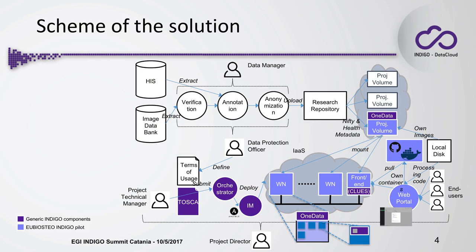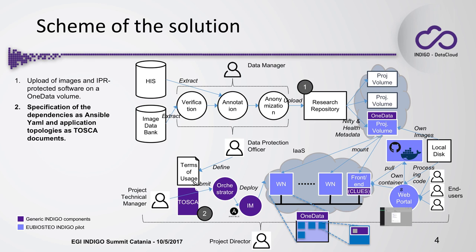Our solution proceeds through several stages. The first stage is to produce the data needed for the project — from hospital information, we go through verification, annotation, and anonymization to create a resource repository available across different project volumes using OneData. Once this volume is created, we need an infrastructure to process it. For that, we specify dependencies as Ansible YAML, defining the virtual infrastructure in a standard document that can be deployed on any public or on-premise cloud.